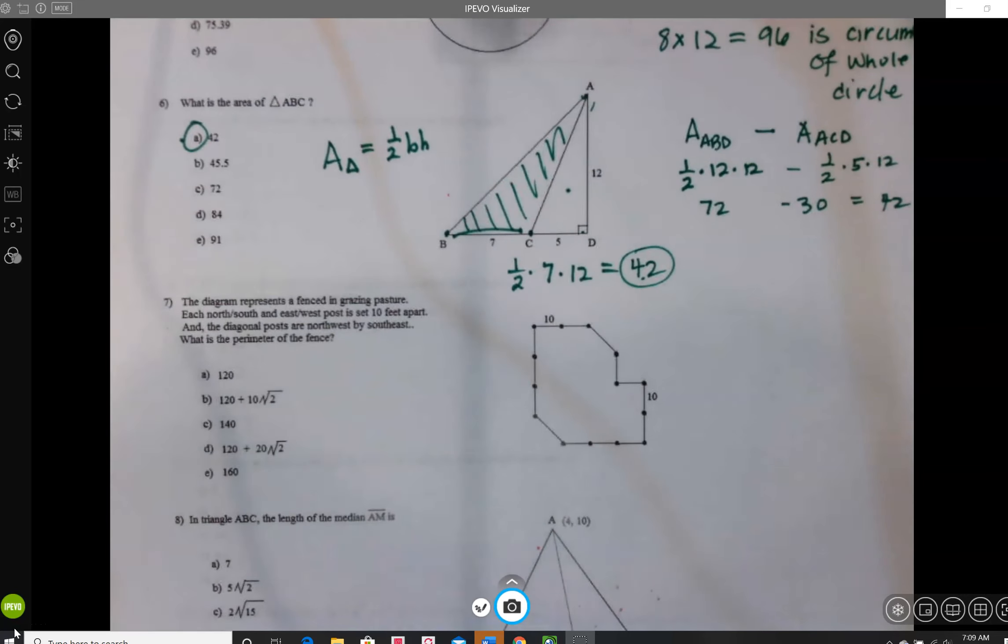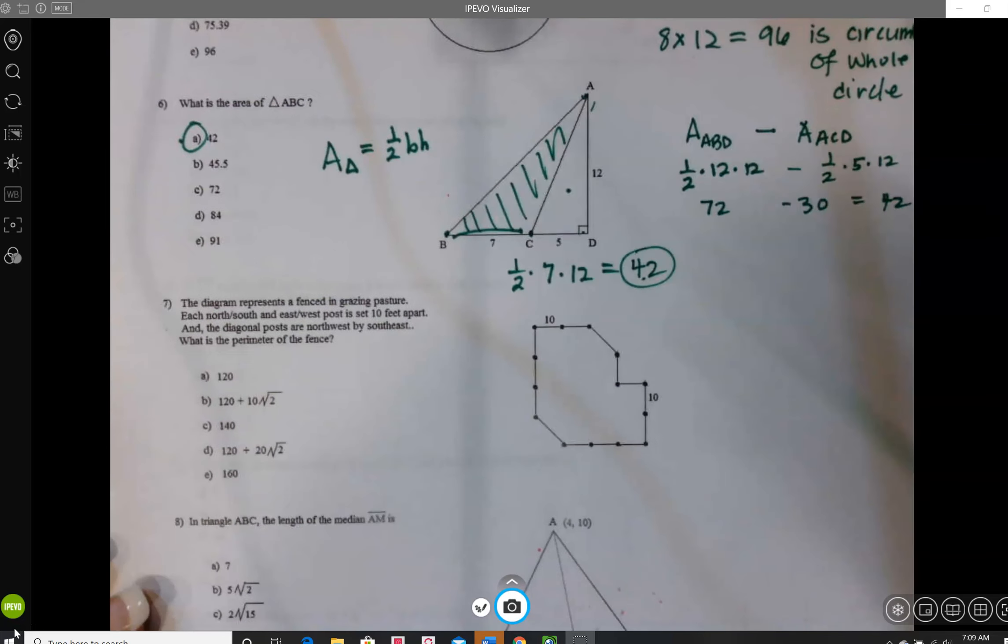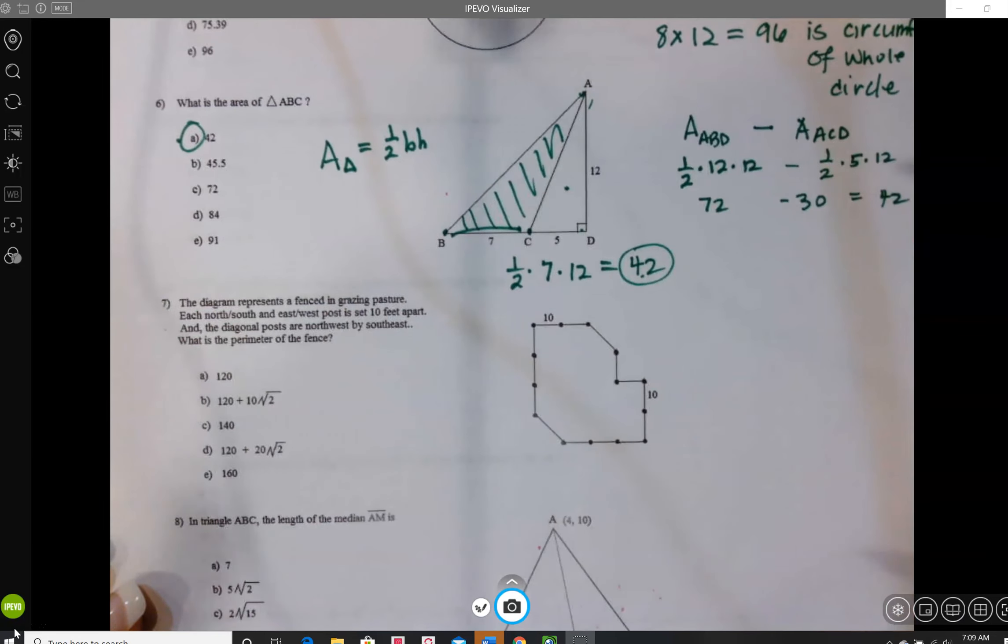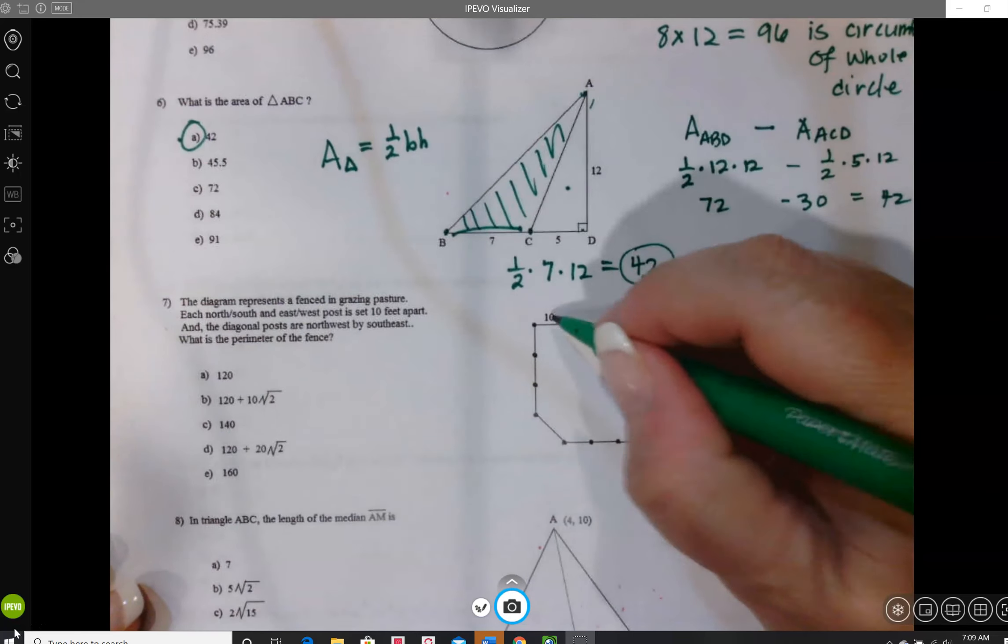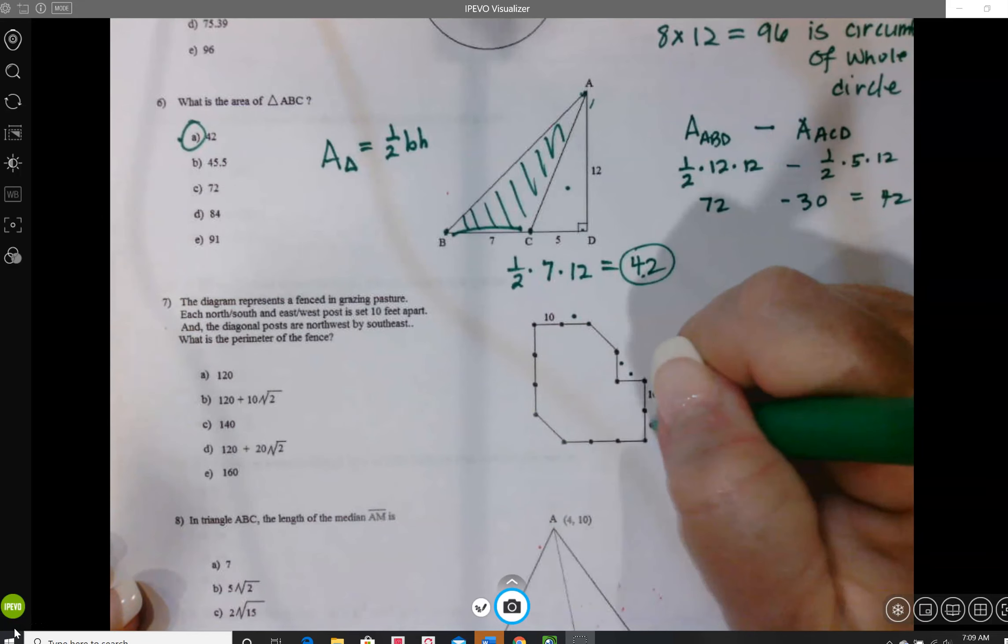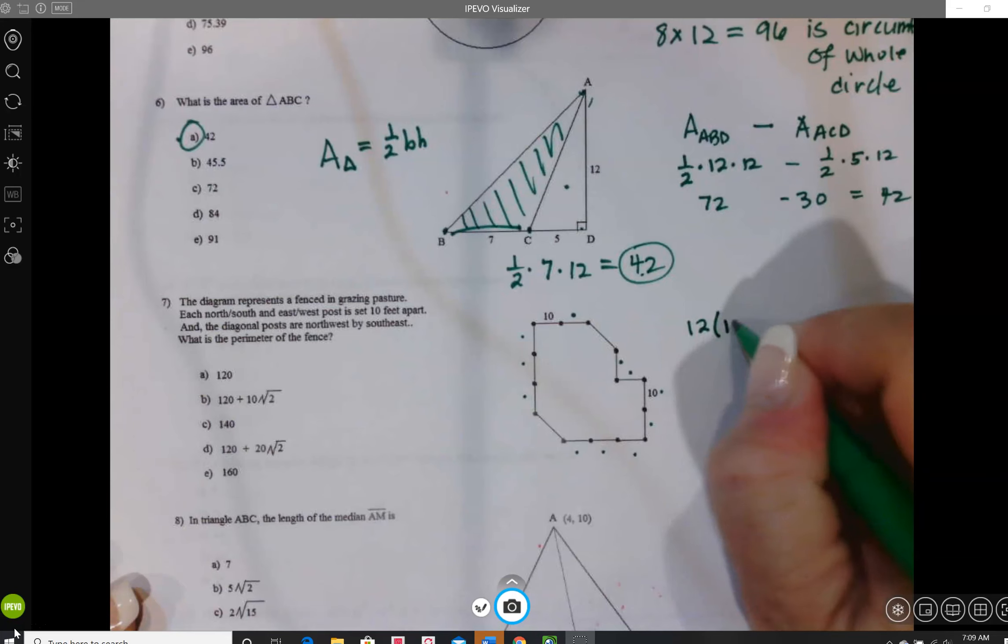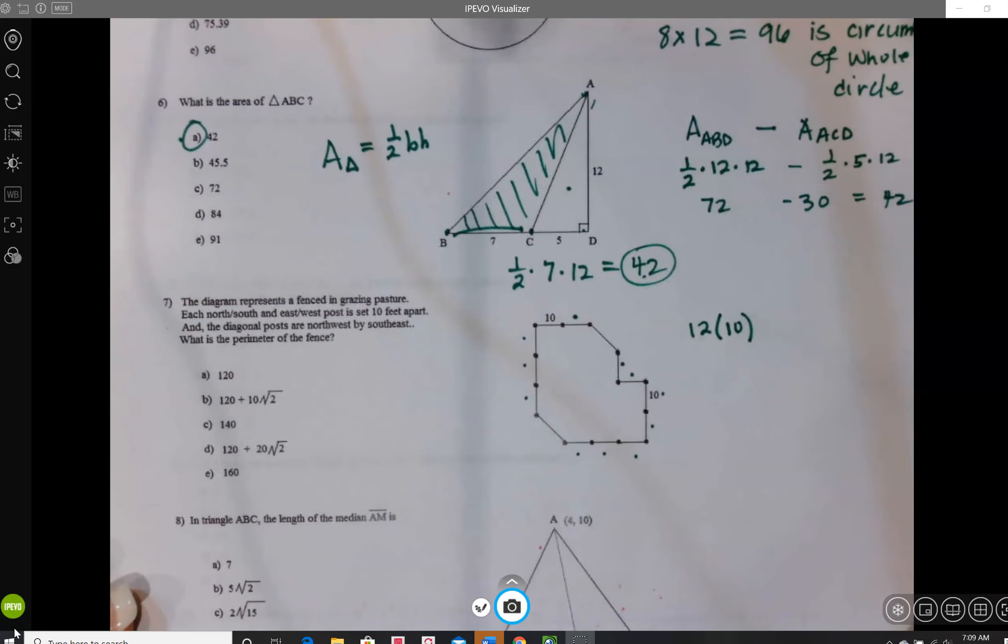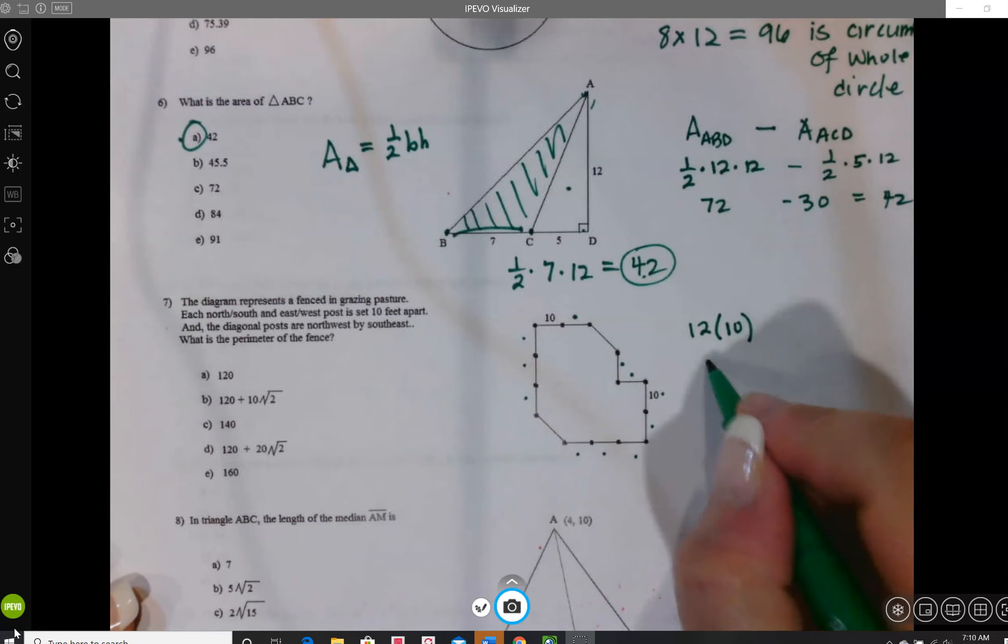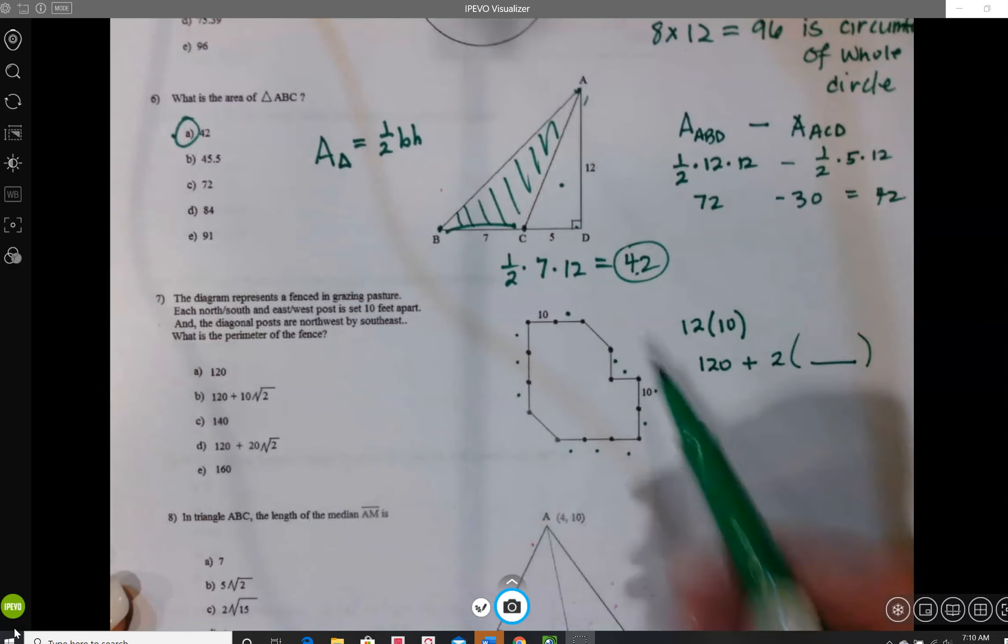Number 7, the diagram represents a fenced-in grazing pasture. Each north-south and east-west post is set 10 feet apart. And the diagonal posts are northwest by southeast. So what's the perimeter of the fence? Basically, guys, you have got to be able to find how long is this diagonal. Because these are 10, they're all 10. So if I add up all the 10s, 1, 2, 3, 4, 5, 6, 7, 8, 9, 10, 11, 12. I've got 12 10s. And then I've got 2 of these diagonals. So I'm going to end up with 120 plus 2 of however long the diagonal is.